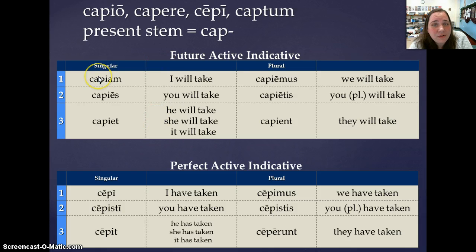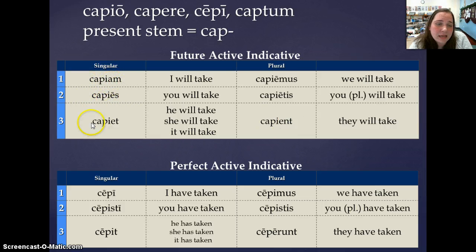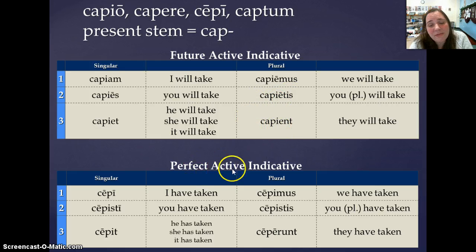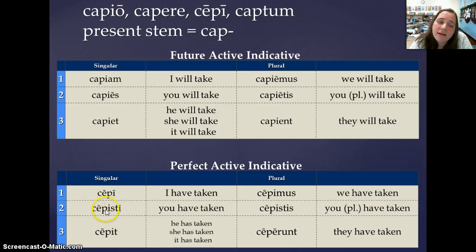In the future: capiam, capies, capiet, capiamus, capietis, capient. And then the perfect active indicative — third principal part, remove the I, put the endings on. So: cepi, cepisti, cepit, cepimus, cepistis, ceperunt.